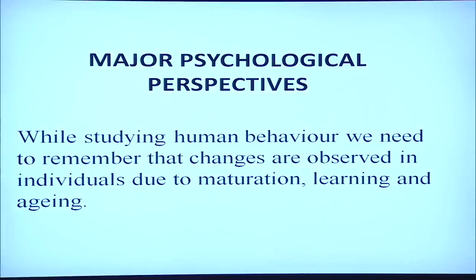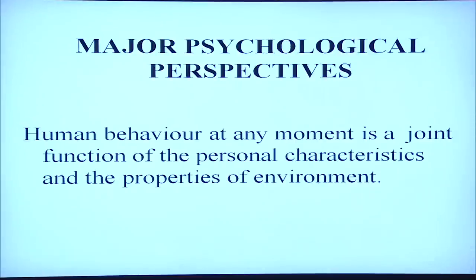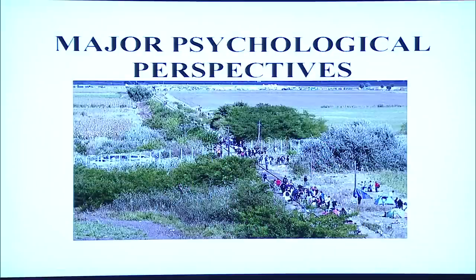While studying human behavior, we need to remember that changes are observed in individuals due to maturation, learning, and aging. Human behavior at any moment is a joint function of the personal characteristics and the properties of the environment. That means the personality of the individual in relation to his environment affects human behavior. For example, how we live, where we live, and what kind of people we are surrounded with all affect the human behavior of an individual at a particular time and place.